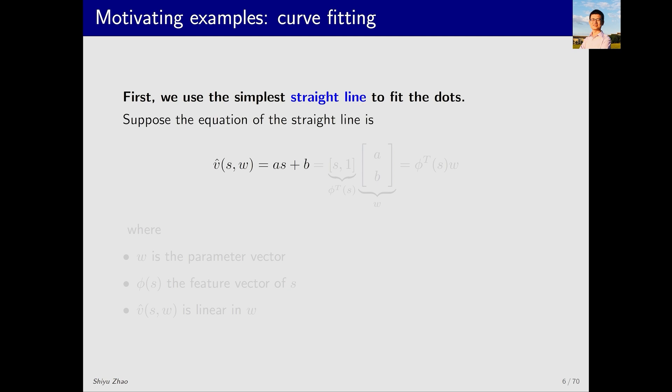The simplest case is to use a straight line to fit these points. What is the equation of the straight line? If the horizontal coordinate is s, then it is as plus b, where a and b are two parameters. I'll use v̂ to represent this function. Here, v̂ represents the approximation of the value and hat usually indicates estimation. Then, v̂ is a function of two quantities, the state s and the parameter w. What is this w? I can write the form as the multiplication of two vectors. The first vector includes s, which I denote as φ. The second vector contains the parameters, denoted as w. Obviously, multiplying these two vectors gives as plus b, so v̂ can be written as φ(s)ᵀw. Here, w and φ have specific names. w is the parameter because this vector is the parameter vector, and φ is called the feature vector. Note that v̂ is linear in w, although it can also be a non-linear function of w. Let's start with the simplest case.